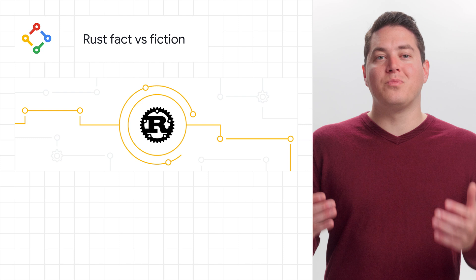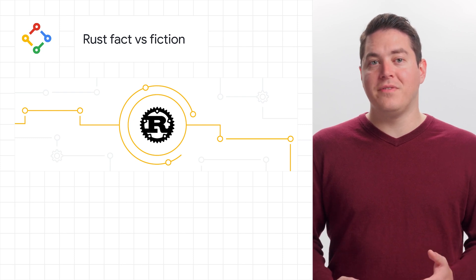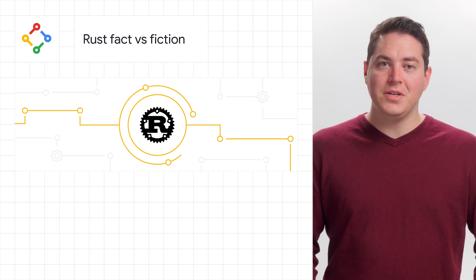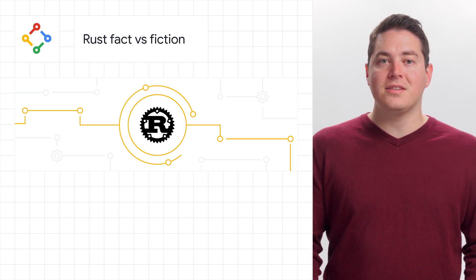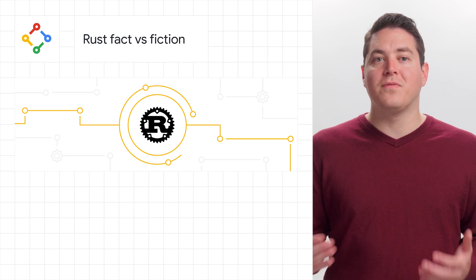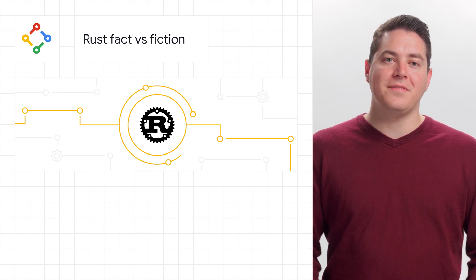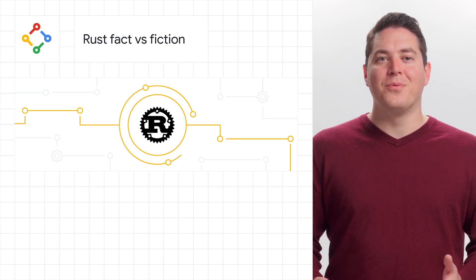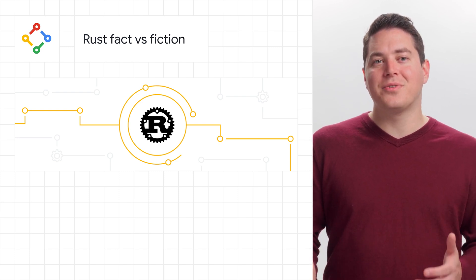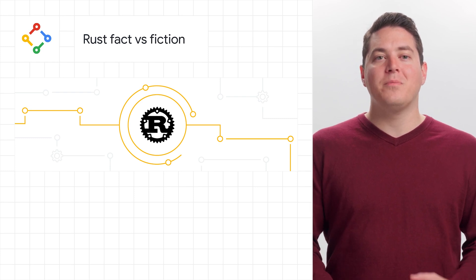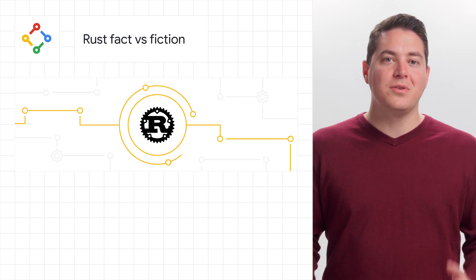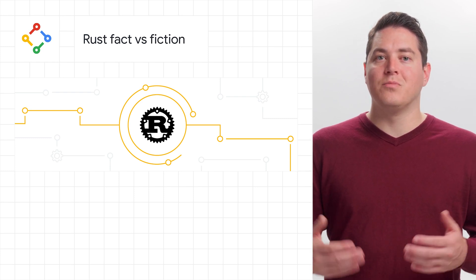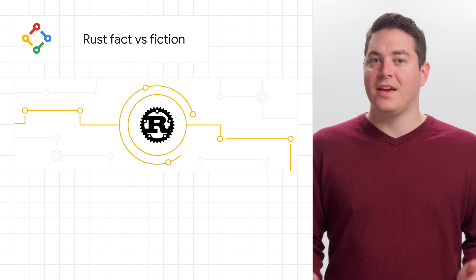Rust only reached 1.0 in 2015, which makes it a relatively new language with a lot to offer and discover in terms of performance and memory safety guarantees. At Google, we have been seeing an increase in Rust adoption, and polling from over a thousand Google developers, we can address some rumors about Rust head-on.